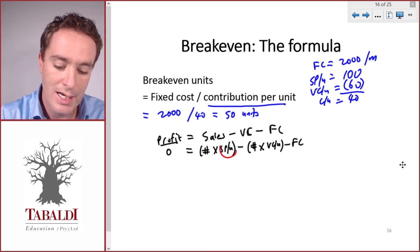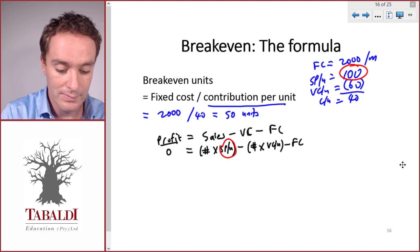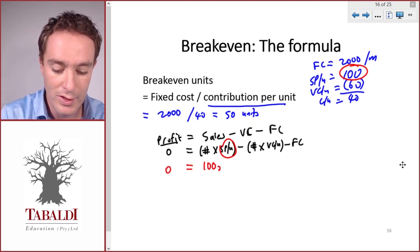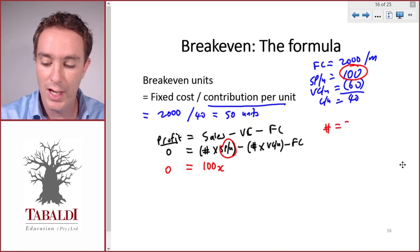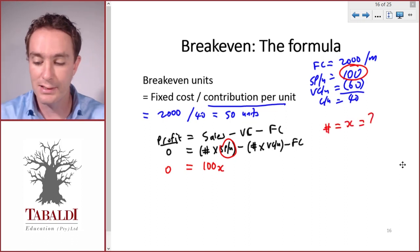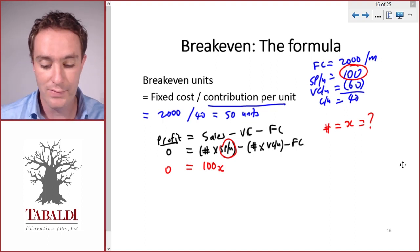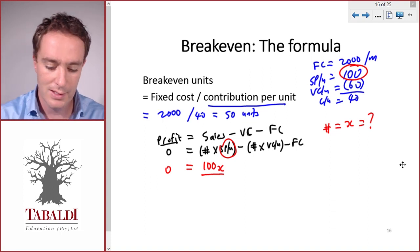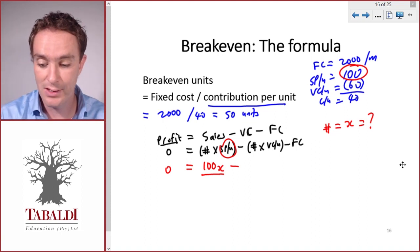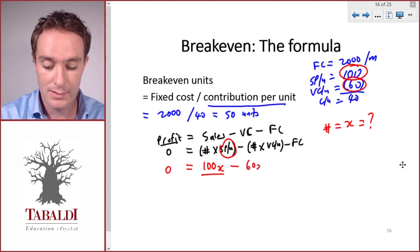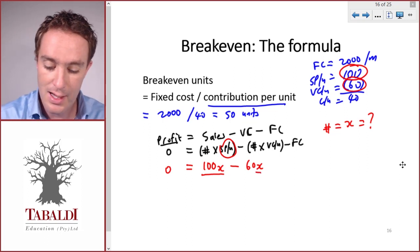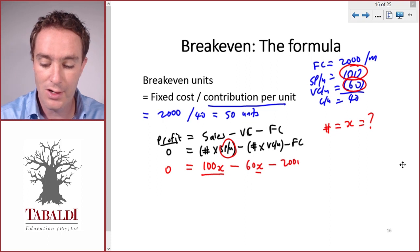We know our selling price per unit is 100. So let's set our number of units equal to X and we want to solve X, the number of units sold to breakeven. Our total sales would be 100X, that's our selling price per unit times the number of units, less our variable costs of 60X, so 60 per unit times the number of units which is X, less fixed costs of 2000.